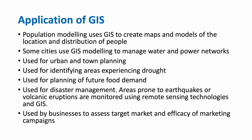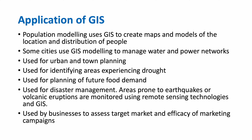The applications of GIS include: population modeling, which uses GIS to create maps and models of the location and distribution of people; managing water and power networks in cities; urban and town planning; identifying areas experiencing drought; planning future food demand; disaster management, where areas prone to earthquakes or volcanic eruptions are monitored using remote sensing technologies and GIS; and helping businesses assess target markets and the efficacy of marketing campaigns.